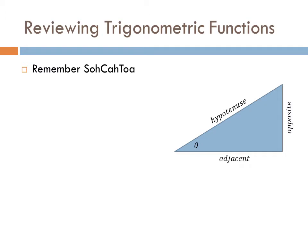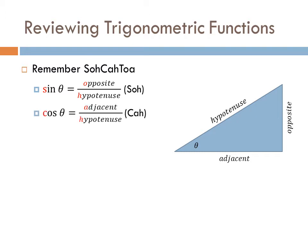Let us review some trigonometric functions. If we have a right triangle, remember the long side is called the hypotenuse. We have our angle theta highlighted. The side opposite theta is called the opposite, and the side connected to theta that is not the hypotenuse is called the adjacent. So you have to remember SOH CAH TOA. The sine is the opposite over the hypotenuse. The cosine is the adjacent over the hypotenuse. The tangent is the opposite over the adjacent.